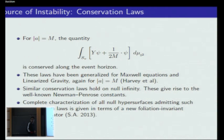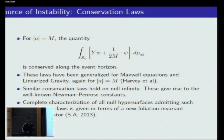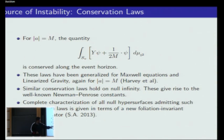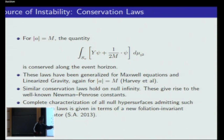These conservation laws are for the linear system. A recent result gives a complete characterization of all null hypersurfaces which admit such conservation laws — not only the event horizon or null infinity, but any null hypersurface on any Lorentzian manifold. We have a criterion that tells us whether a given null hypersurface has a conservation law or not. This in particular generalizes previous results and the Newman-Penrose constants, and addresses a standing problem in general relativity to put Newman-Penrose constants in the appropriate mathematical context.